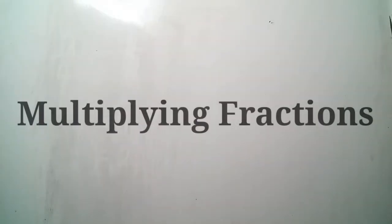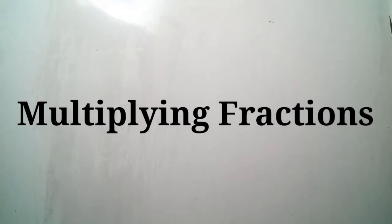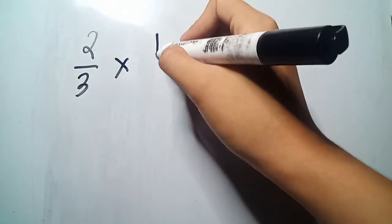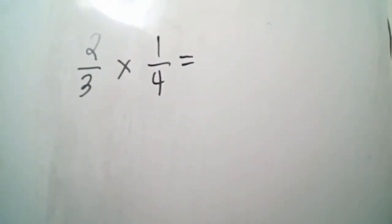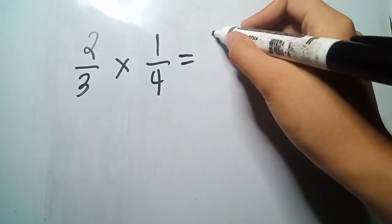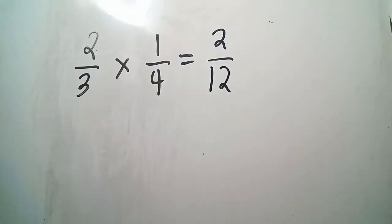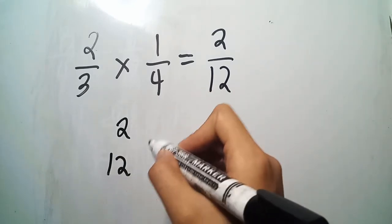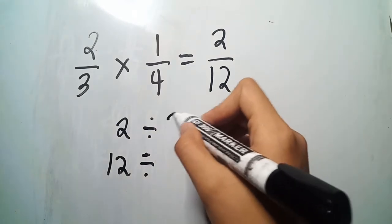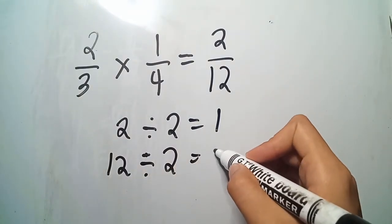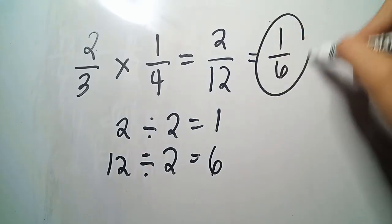In multiplying fractions, we will simply multiply the numerators, then we will also multiply the denominators. For example, 2 thirds times 1 fourth. Simply multiply the numerators: 2 times 1 is 2, and the denominators: 3 times 4 is 12. Now, 2 and 12 can still be simplified — they are both divisible by 2. 2 divided by 2 gives us 1; 12 divided by 2 gives us 6. Therefore, the product is 1 over 6.